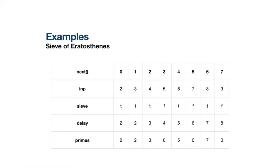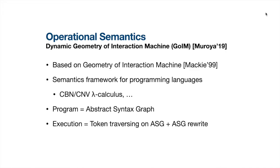In the second part of this talk, I'd like to discuss the operational semantics informally. The operational semantics of TSD is based on a graph abstract machine called the Dynamic Geometry of Interaction Machine (DGOIM). It is a semantic framework for programming languages with different evaluation strategies — for example, call-by-need or call-by-value lambda calculus. Under this framework, a program is represented by an abstract syntax graph, and execution is represented by a token running on the ASG, collecting information to guide how the graph should be rewritten. When the token comes back, it carries the return value and leaves a graph corresponding to that value.